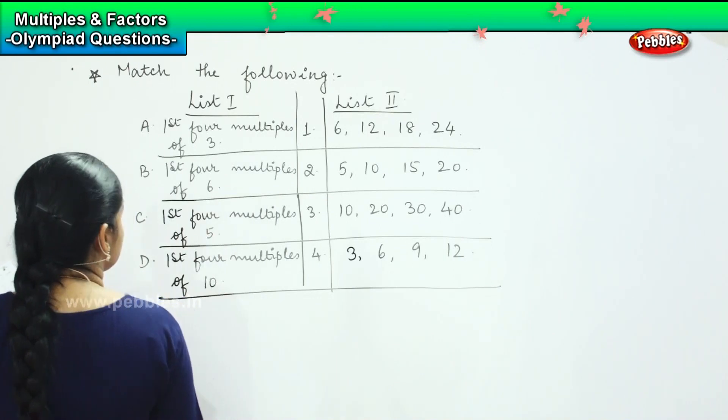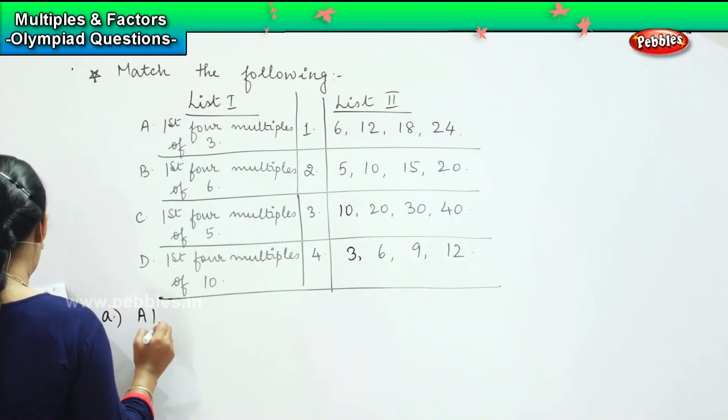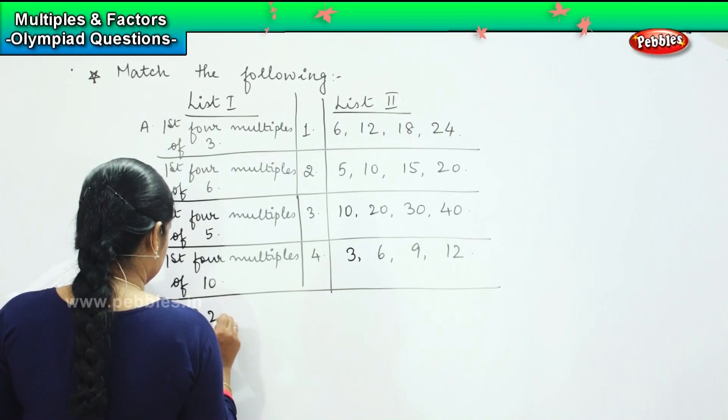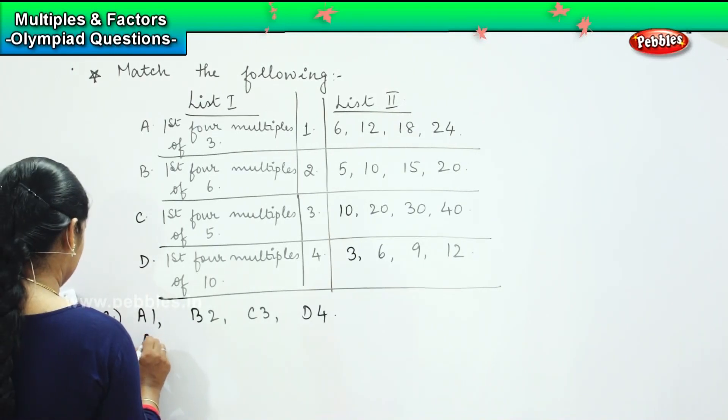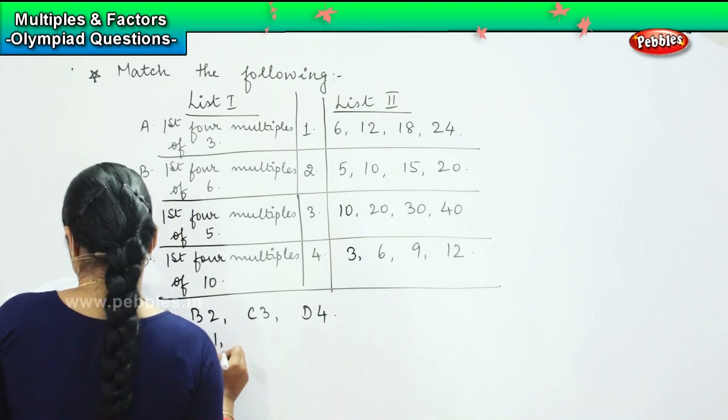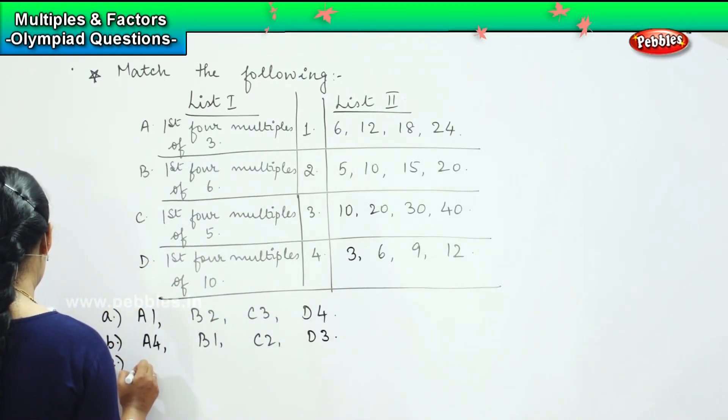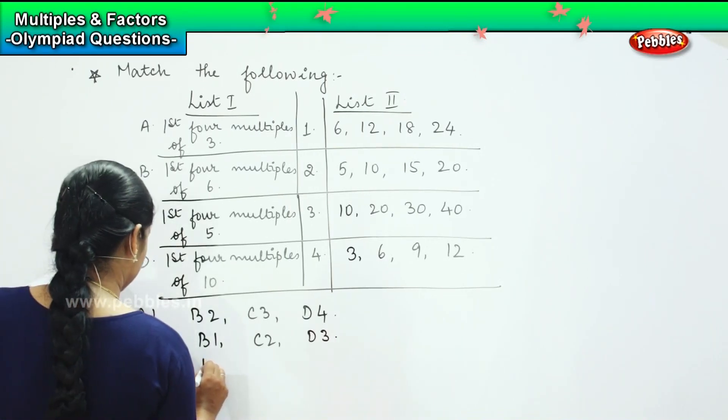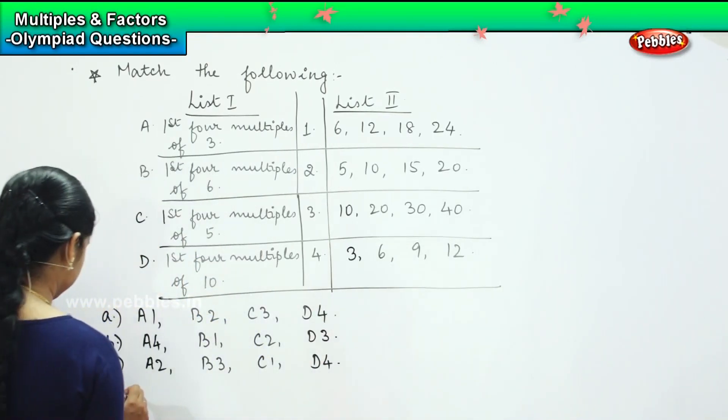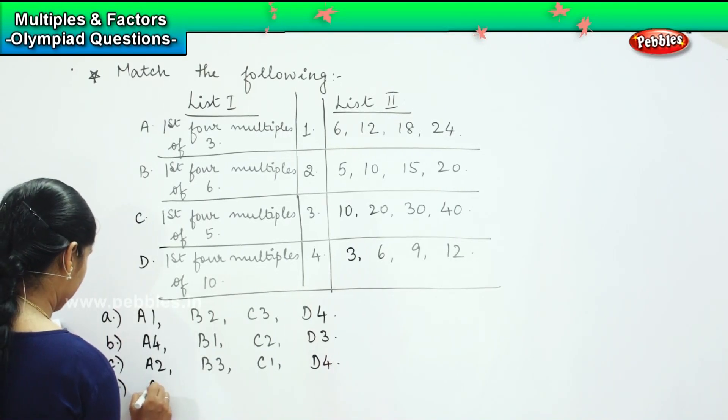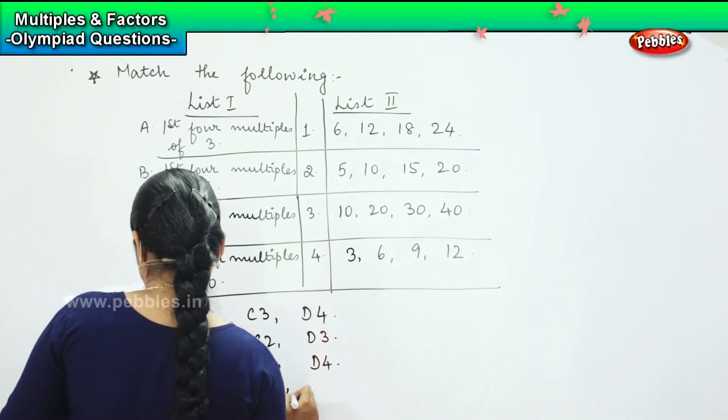So now the options are option A: A1, B2, C3, D4. Option B: A4, B1, C2, D3. Option C: A2, B3, C1, D4. And option D: A4, B2, C3, and D1.